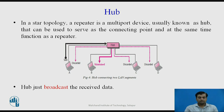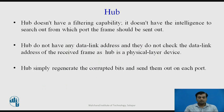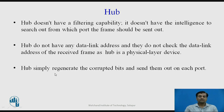A hub does not have any filtering capability or intelligence to determine which port a frame should be sent out from — it simply broadcasts the frame on each and every port. Hubs are physical layer devices, so they do not have data link addresses and do not check for data link addresses in received frames, meaning they cannot filter traffic. Hubs simply regenerate corrupted bits and send them out on every port.